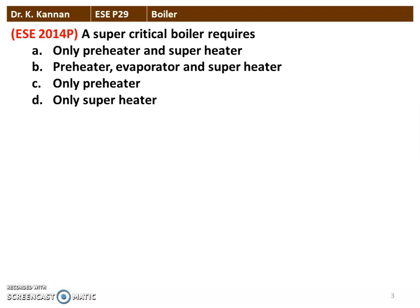Next question: a supercritical boiler requires — options are: only preheater and the superheater; preheater, evaporator, and the superheater; only preheater; only superheater. The supercritical boiler operates above the critical pressure, so it requires only the preheater (water preheater, known as economizer) and the superheater. We have economizer and the superheater in the supercritical boiler, where the operating pressure is above 221 or 230 bar.